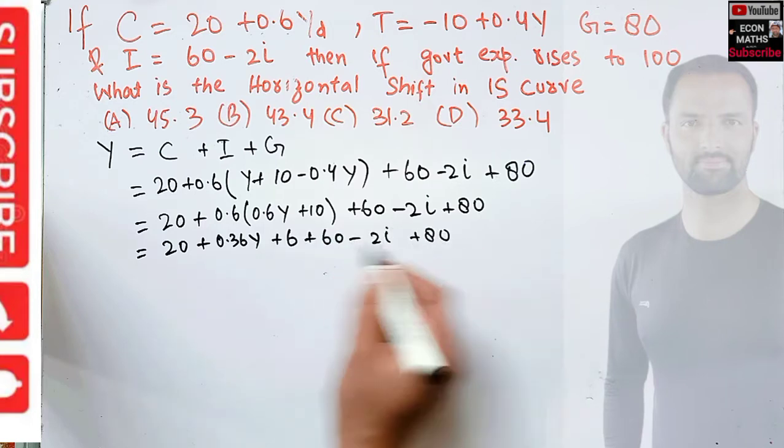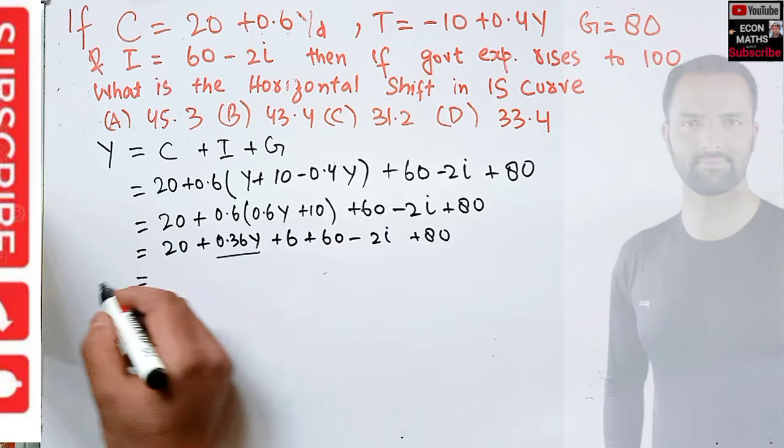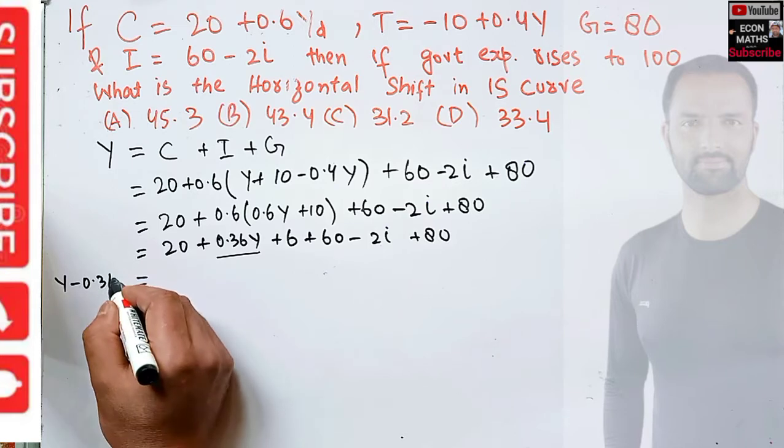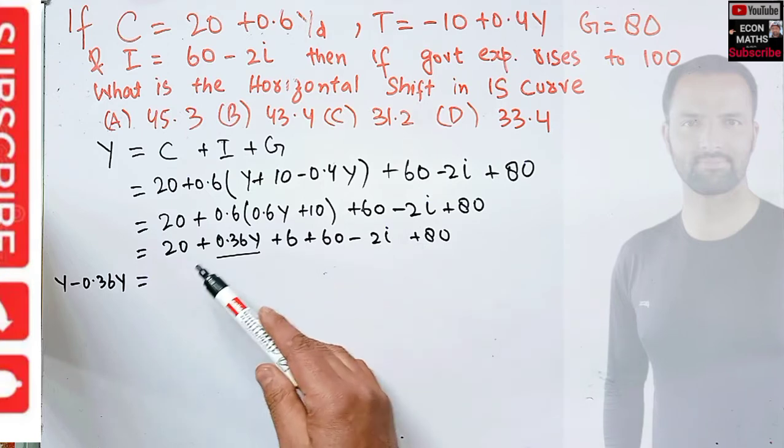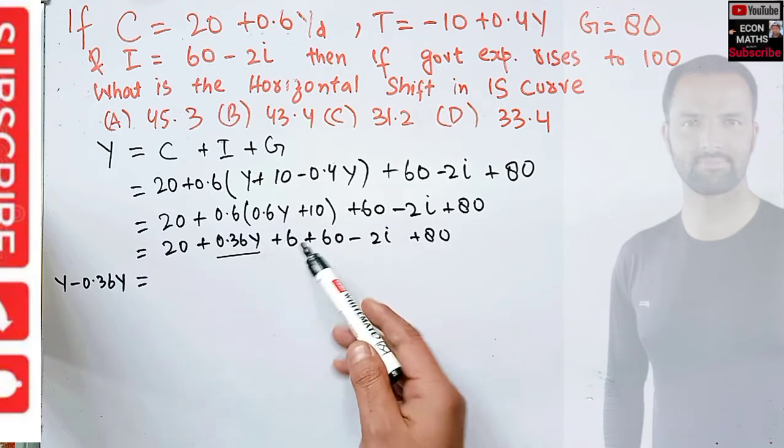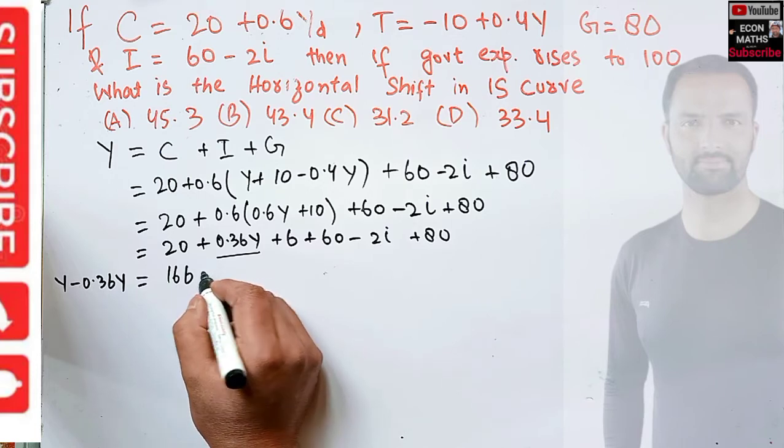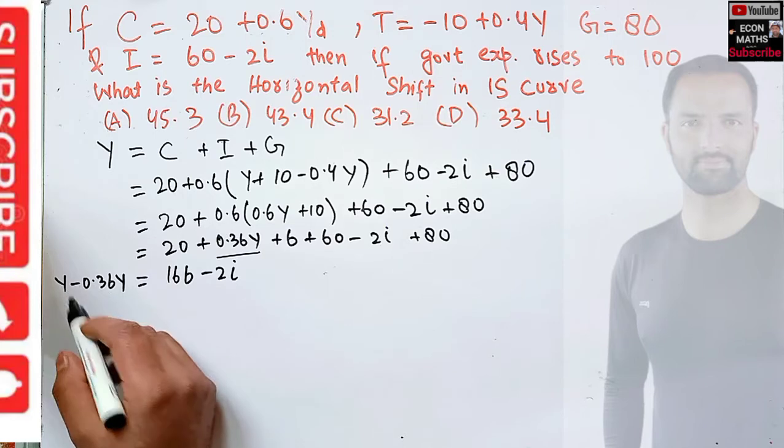This equals 20 + 0.36Y + 6 + 60 - 2i + 80. If we transpose terms to the left hand side, we get Y - 0.36Y = 20 + 80 + 60 + 6 - 2i, which is 166 - 2i.